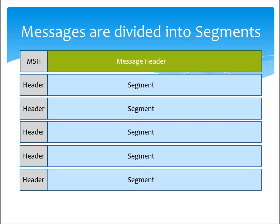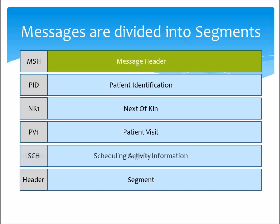Every segment has its own three-letter header that identifies what the segment is about. Some common ones include PID, which provides the patient information. NK1 is a repeatable segment that lists the patient's next of kin. PV1 provides details of the patient's visit, such as doctors and dates. SCH is for updating appointments into the hospital schedule. OBRs provide details of a group of observation results.